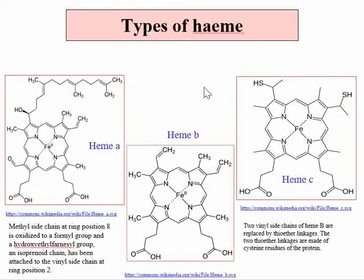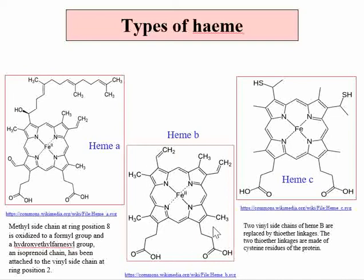There are three types of heme prosthetic groups: heme A, heme B, and heme C. Most heme proteins contain the heme B type. We will first examine the structure of heme B and then compare it with heme A and heme C.